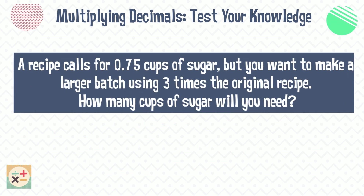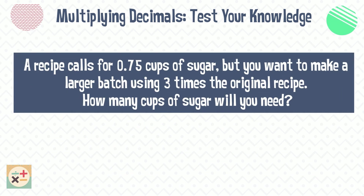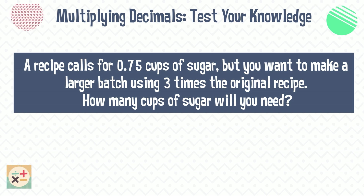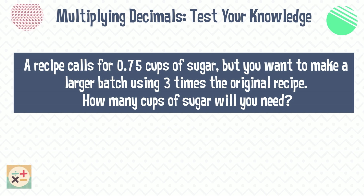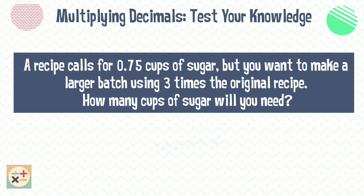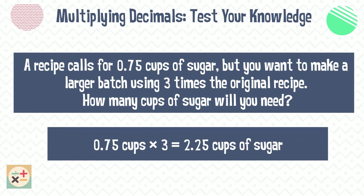Question eight: a recipe calls for 0.75 cups of sugar, but you want to make a larger batch using three times the original recipe — how many cups of sugar will you need? You will need 2.25 cups of sugar.